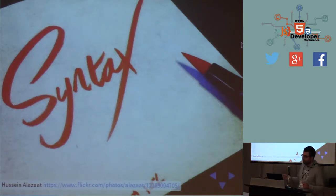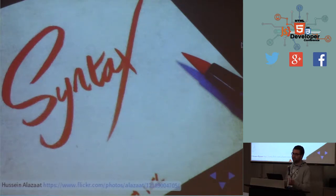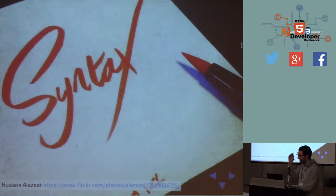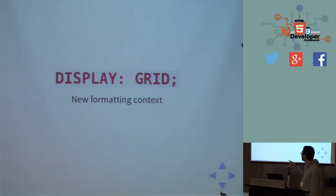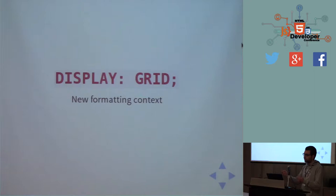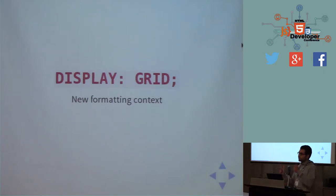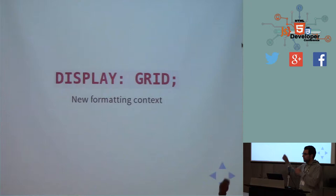Now let's go through the CSS Grid Layout syntax. The spec is huge with many options, so I'll go fast and explain the main features. Everything starts with a new value for the display property: `display: grid`. Similar to Flexbox where you use `display: flex`, we also have `display: inline-grid` if needed. When you put `display: grid` on an element, that element becomes a grid container — meaning its children become grid items and you're setting a new formatting context. The children no longer follow the regular page flow; they follow the rules defined by the CSS Grid Layout spec.